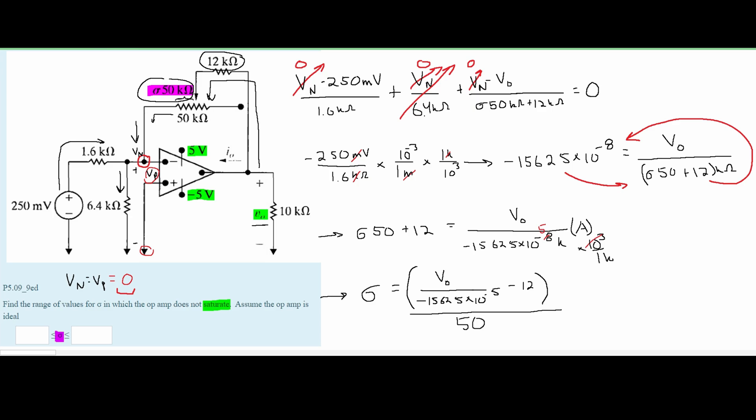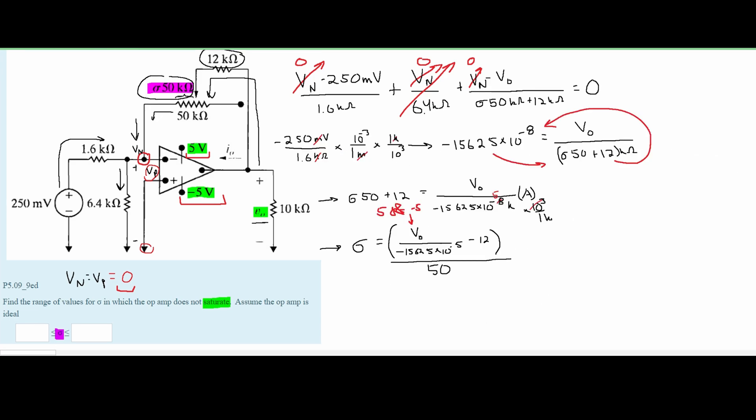The negative that we get from this alpha will be our lower bound, and the positive will be our upper bound. So we're going to plug 5 and negative 5 into here. If we do this carefully and correctly for our 5 value, we are going to get 0.4, and for our negative 5 value, we are going to get negative 0.88.